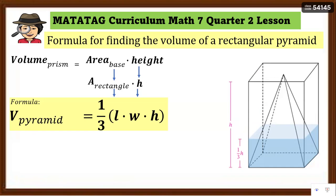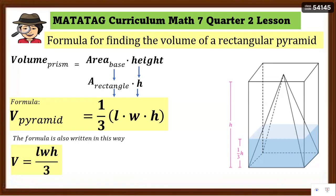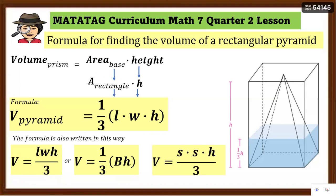The formula for the volume of a pyramid can also be written in different forms: V = (length × width × height) / 3, which is the same as one-third. If the area of the base is given directly, use V = (base area × height) / 3. For a square base, since all sides are equal, replace length × width with side × side, giving V = (side² × height) / 3.